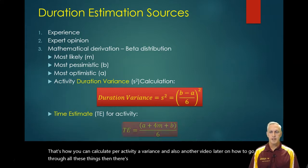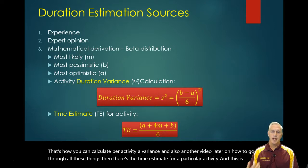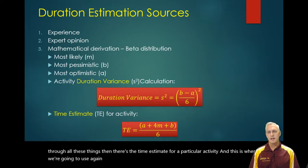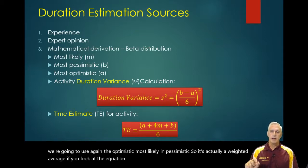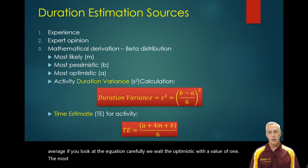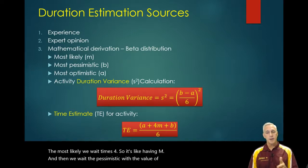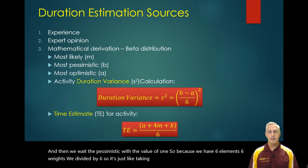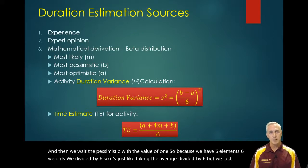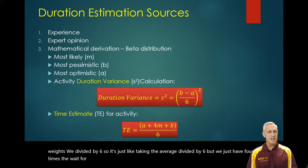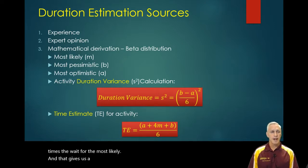Then there's the time estimate for a particular activity, and this is where we use the optimistic, most likely, and pessimistic again. It's actually a weighted average. We weight the optimistic with a value of one, the most likely we weight times four — it's like having M plus M plus M plus M — and then we weight the pessimistic with a value of one. Because we have six total weights, we divide by six. We just have four times the weight for the most likely, and that gives us a time estimate for each and every activity.